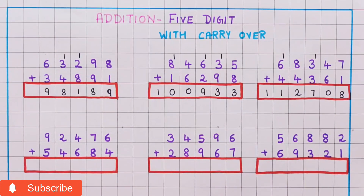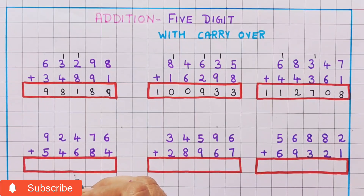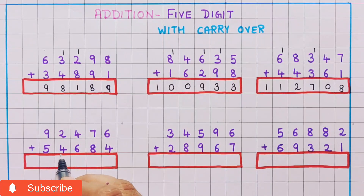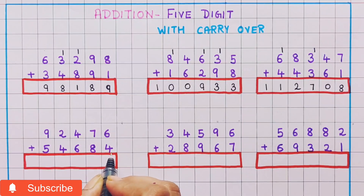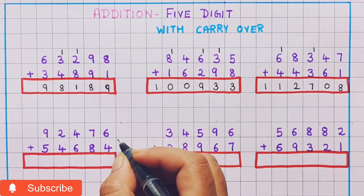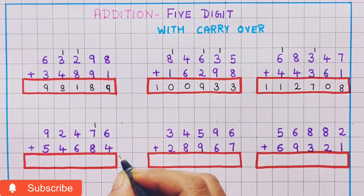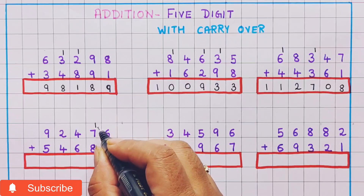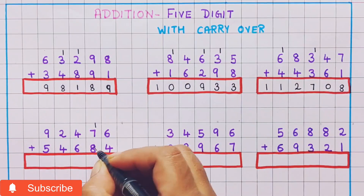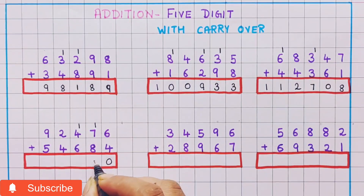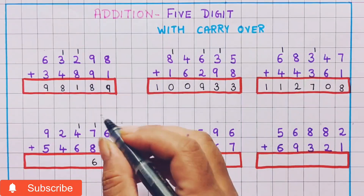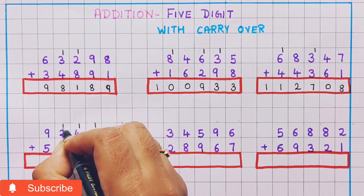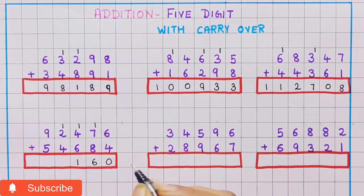I hope the addition is clear to you. Now let's do the next problem: 92,476 plus 54,684. Now 6 plus 4 is 10, so 1 and 0. 7 plus 1 is 8, and 8 plus 8 is 16, so here I will write 1 and 6. Now 4 plus 1 is 5, and 5 plus 6 is 11, so I will write 1 and 1.